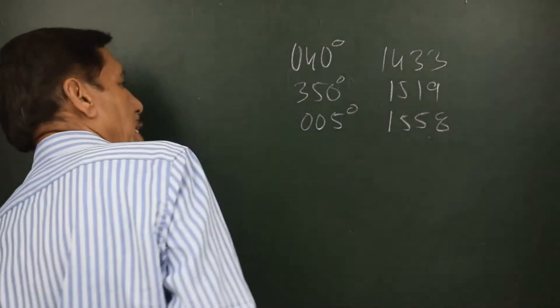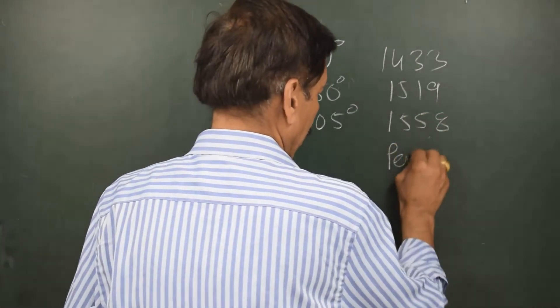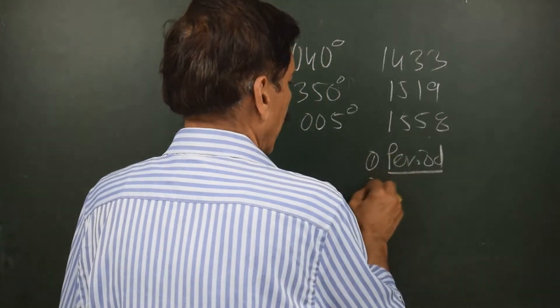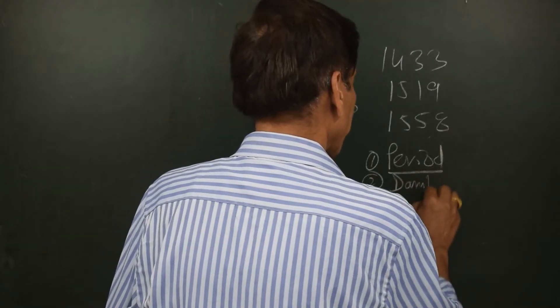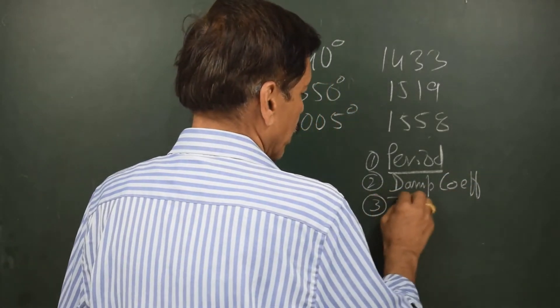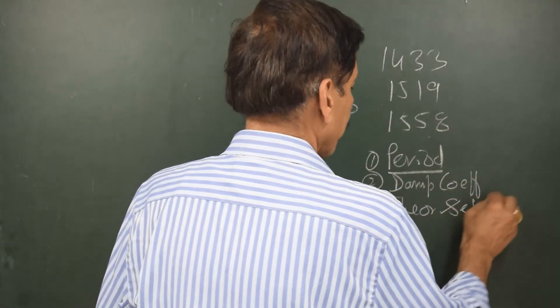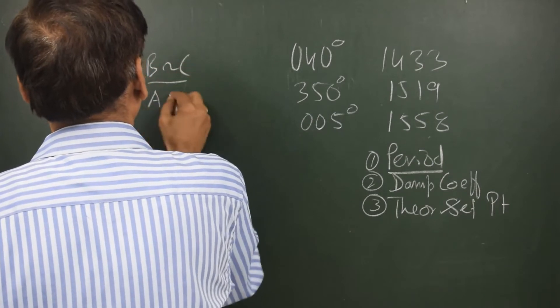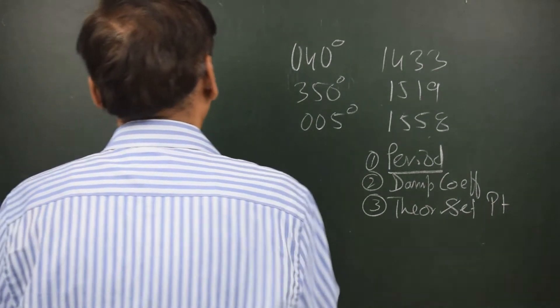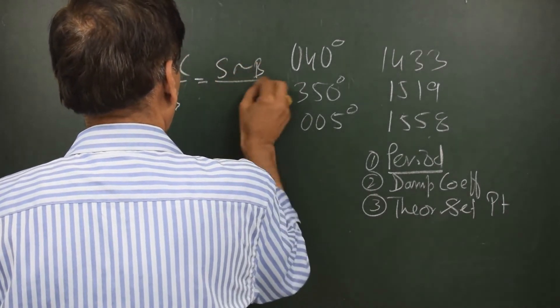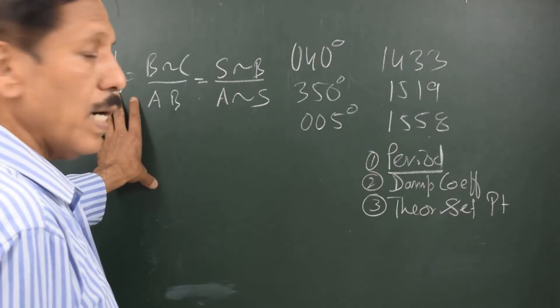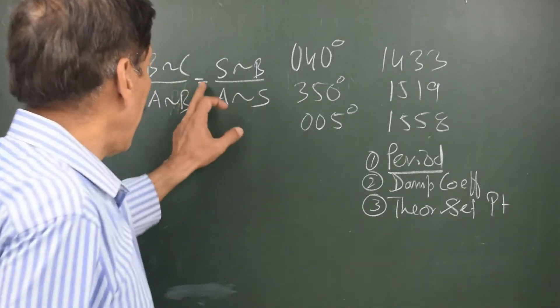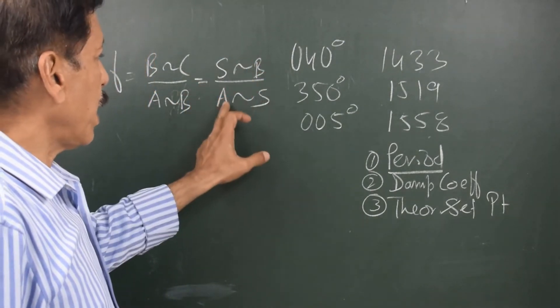So what you have to find out is the period of gyro, the cycle period of the gyro, number one. And number two, what is the damping coefficient? And the third one is theoretical settling point. Damping factor equal to B difference C divided by A difference B, and it is equal to S difference B divided by A difference S.